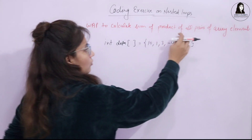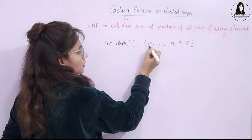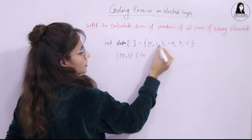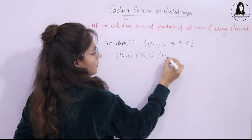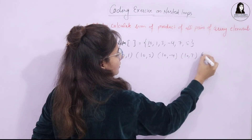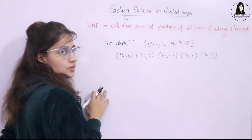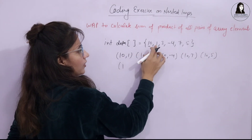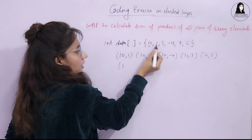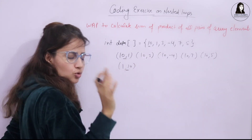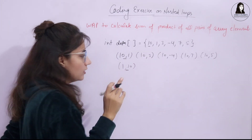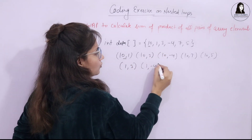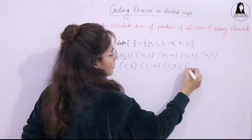You have to find out the pairs of these array elements. For example, pairs for 10 are: 10 with 1, 10 with 3, 10 with -4, 10 with 7, and 10 with 5. Now for element 1, the pairs are: 1 with 3, 1 with -4, 1 with 7, and 1 with 5. Note that 1 and 10 is not a new pair — it's the same as 10 and 1, so no duplicate pairs.